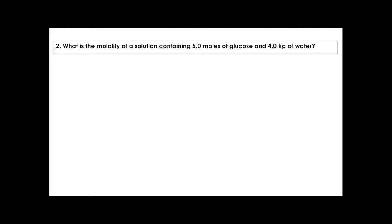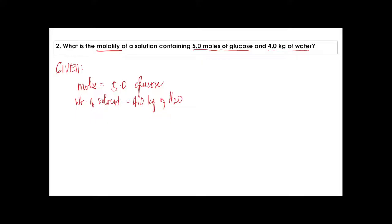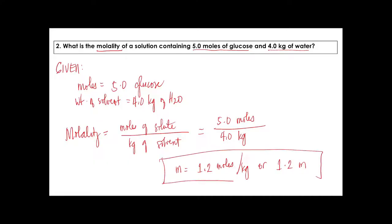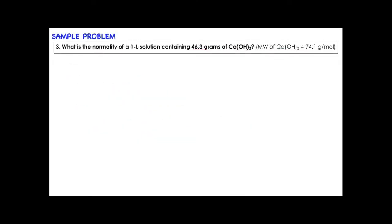Sample problem 2: What is the molality of a solution containing 5 moles of glucose and 4 kilograms of water? The moles are already given, so no need to solve for them. Molality = moles of solute ÷ kilograms of solvent = 5 moles ÷ 4 kg = 1.2 moles per kilogram, or simply 1.2 molal.